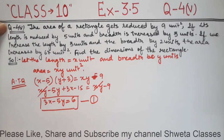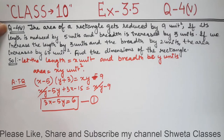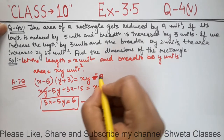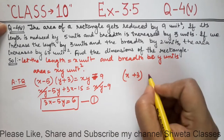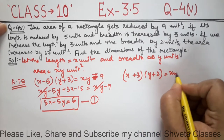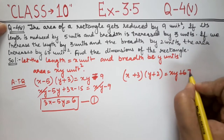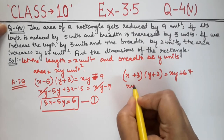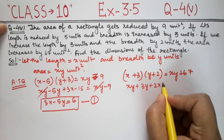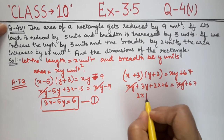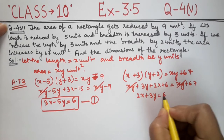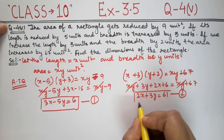Now we will form Equation 2. If we increase the length by 3 and the breadth by 2, the total area increases by 67 units. So x plus 3 times y plus 2 equals xy plus 67. Expanding: xy plus 3y plus 2x plus 6 equals xy plus 67. xy cancels, giving us 2x plus 3y equals 61. That is Equation 2.